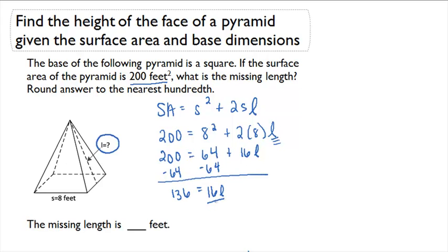If I divide both sides by 16, I get L equals 8.5 feet. So the slant height of this pyramid is 8.5 feet.